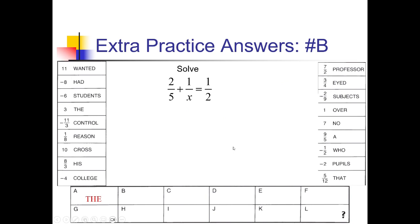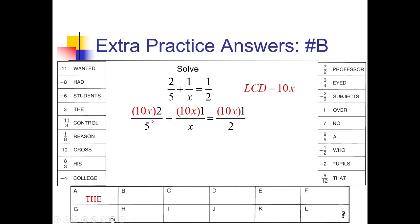Here's problem B. I've got 5 and 2 in the denominators, and the smallest number both go into is 10. I also need an x, so I multiply everything by 10x. The 10 over 5 gives us 2, the x's cancel in the second fraction, and 10 over 2 gives us 5 in the last. So we have 4x plus 10 equals 5x, which gives x equals 10. So 10 matches up with the word 'cross' — B is 'cross.'